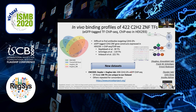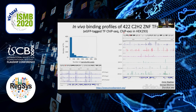Putting everything together — the ENCODE dataset and the previous datasets — we have 422 TFs for which we have ChIP-seq and ChIP-exo data. All of this ENCODE data has been processed by ENCODE's processing pipelines and can be found on the ENCODE project website.